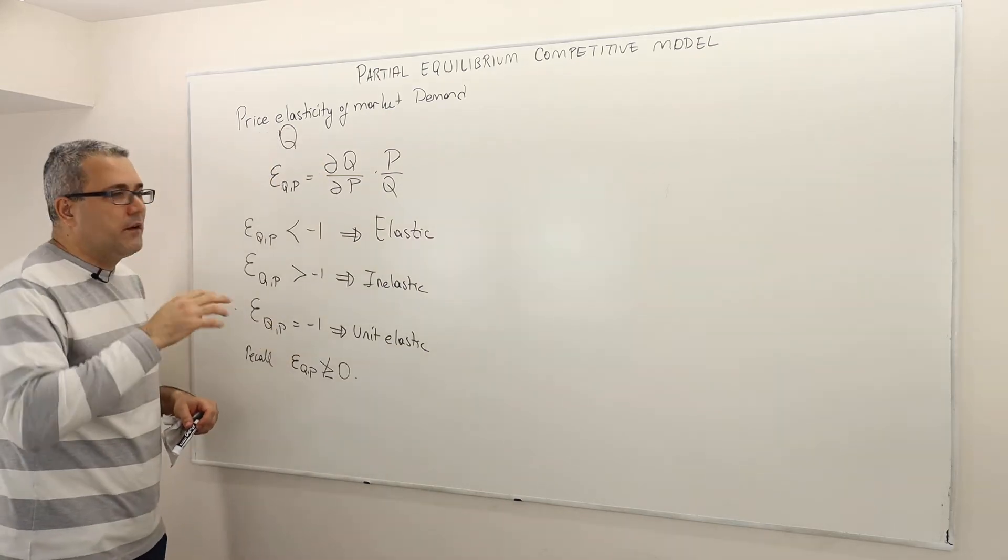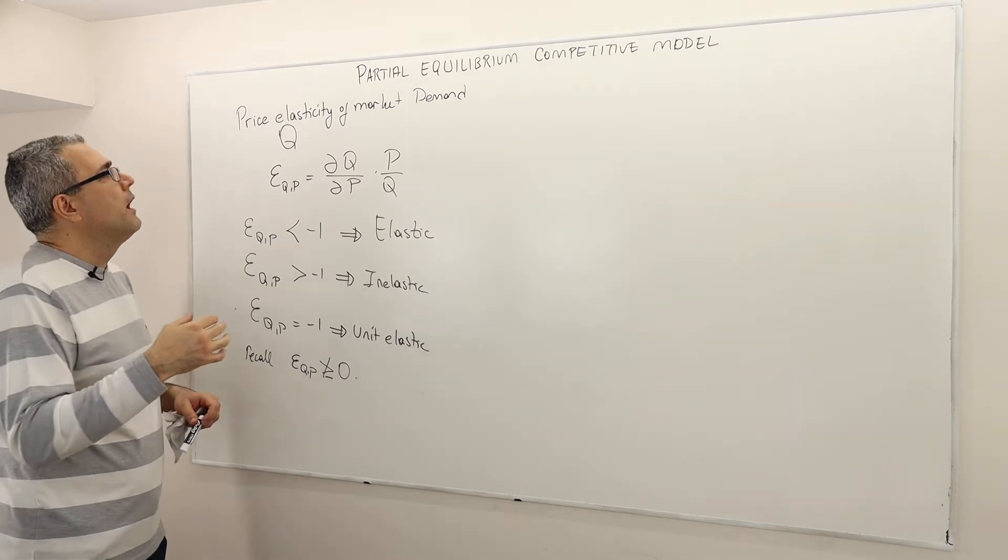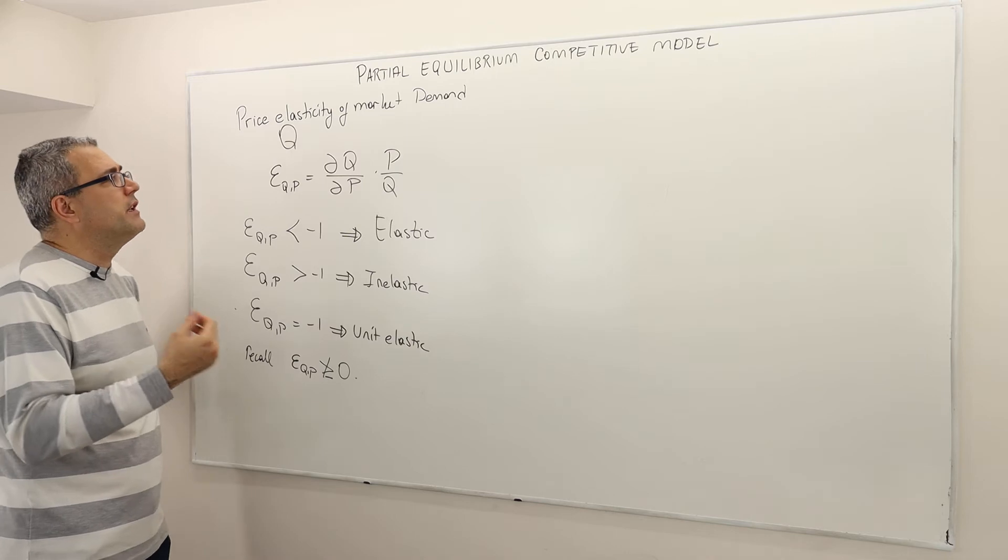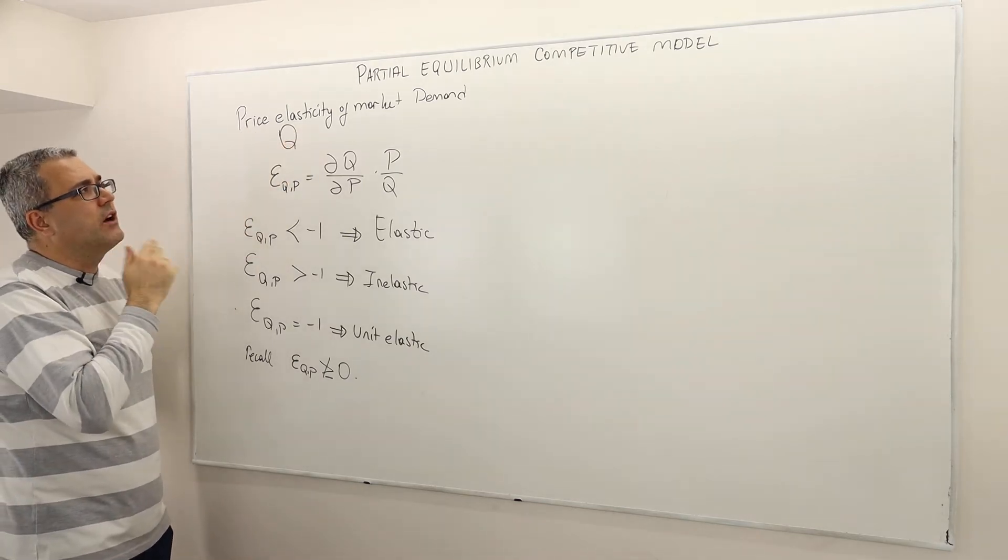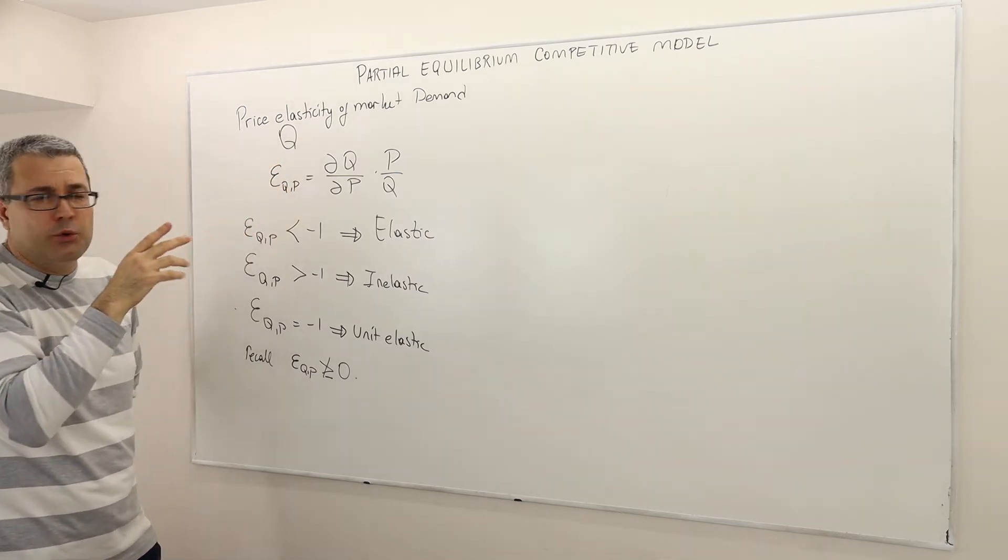So now let's talk about a few definitions that we already remember probably from our discussions in individual consumers' demand curves. We're going to talk about price elasticity of the market demand. So let's denote the market demand by Q.